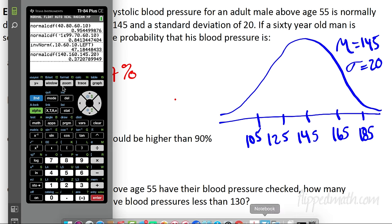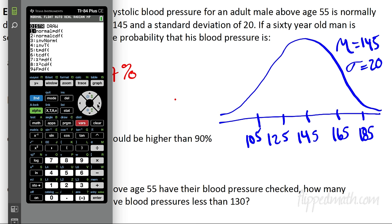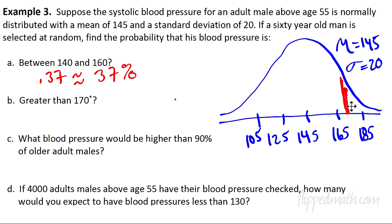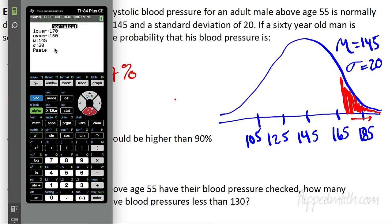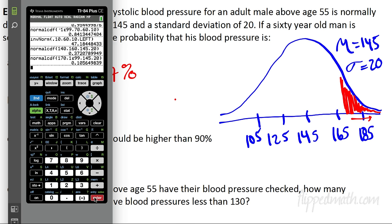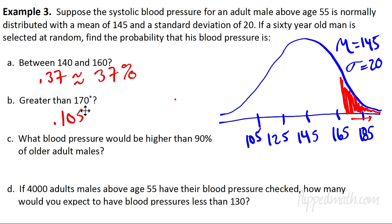Next, find the probability of blood pressure greater than 170. On the curve, 170 is out to the right, and we want the area from 170 up to infinity. Using normal CDF with lower bound 170, upper bound 1E99, mean 145, standard deviation 20 — we get 0.1056, which is about 10.56%.